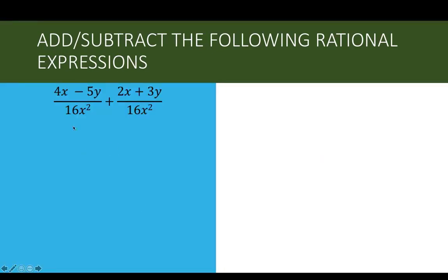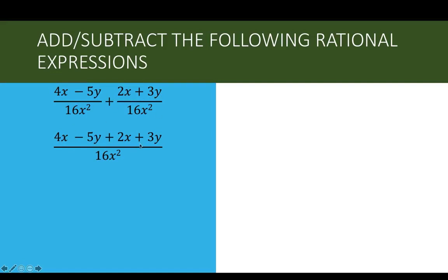Let's have another example: 4x minus 5y over 16x squared added to 2x plus 3y over 16x squared. Again, inspect the denominators — you have 16x squared and 16x squared, so these two rational expressions are similar. Copy the common denominator and combine the numerators: 4x minus 5y combined with 2x plus 3y. Now check for terms in the numerator that can be combined.